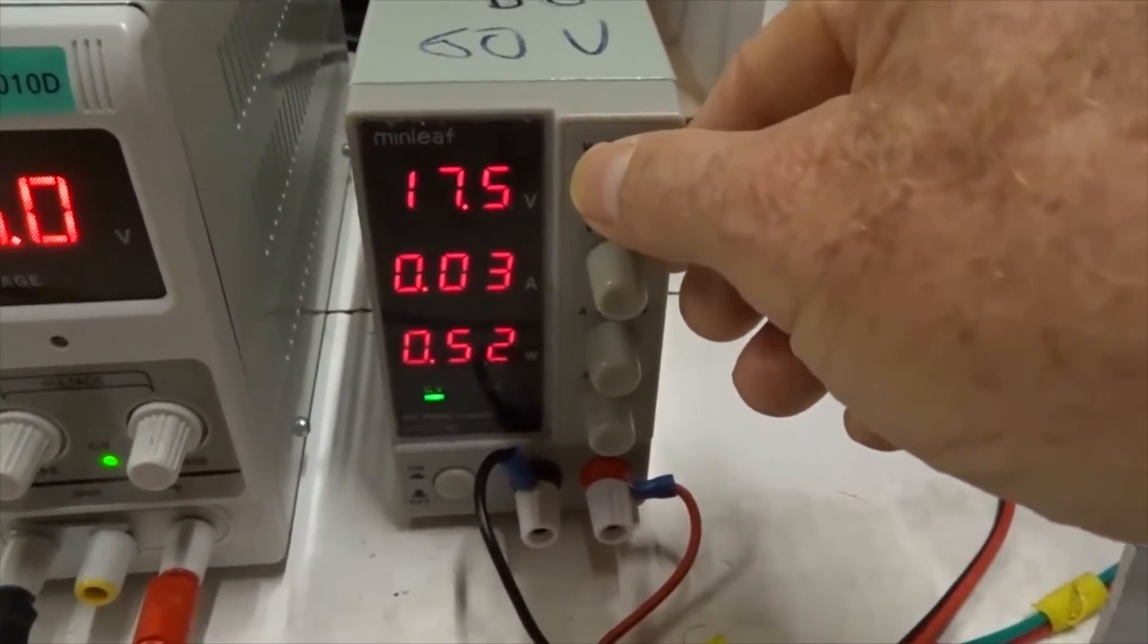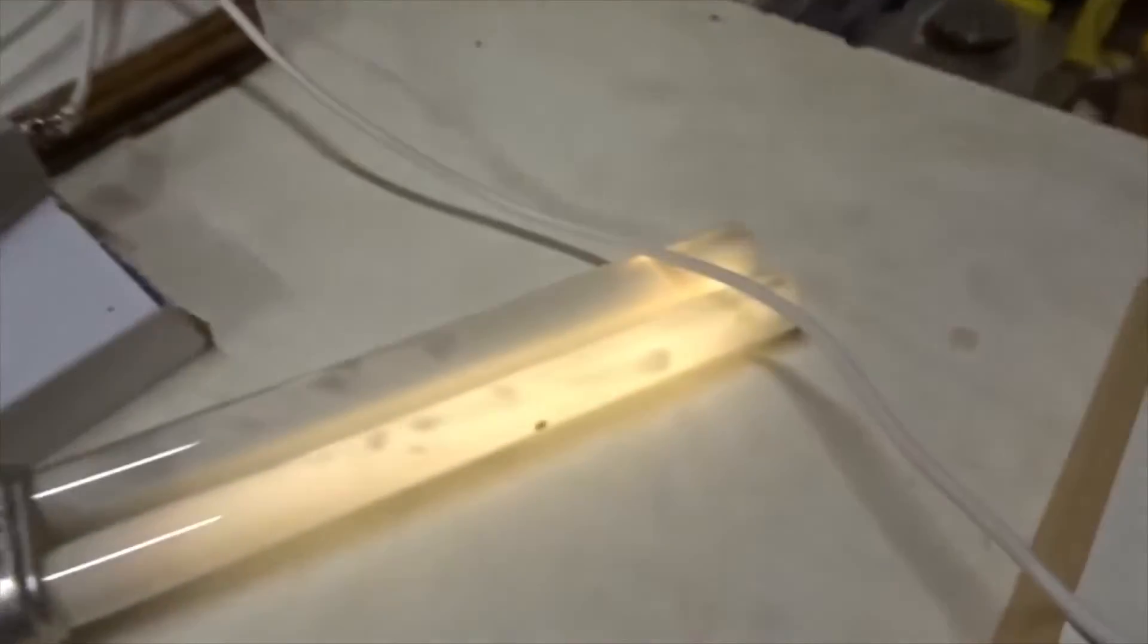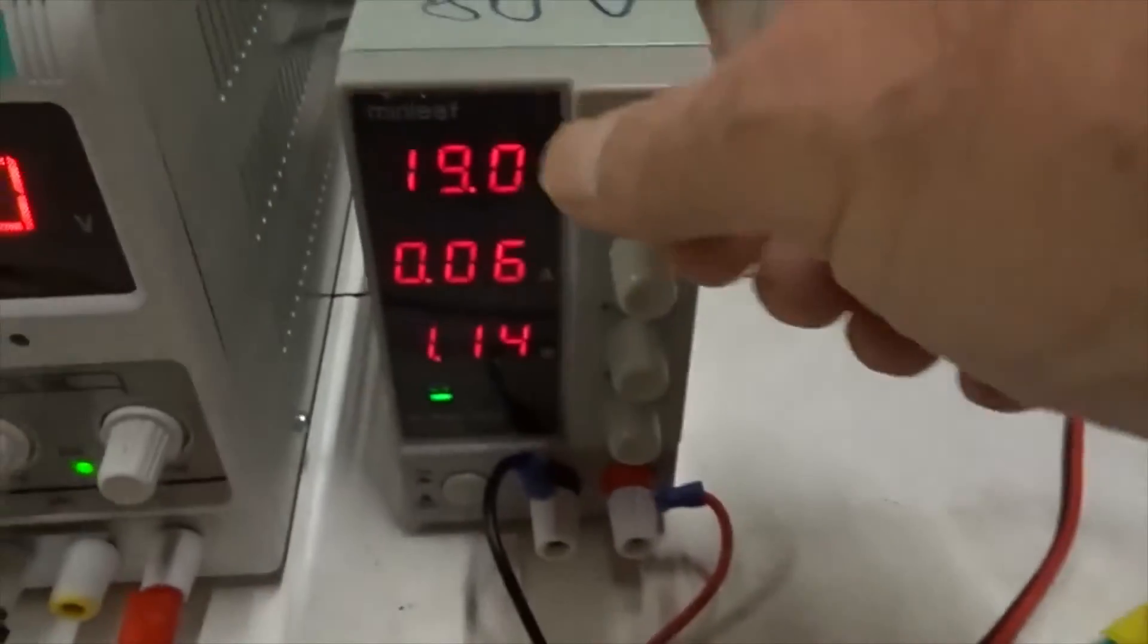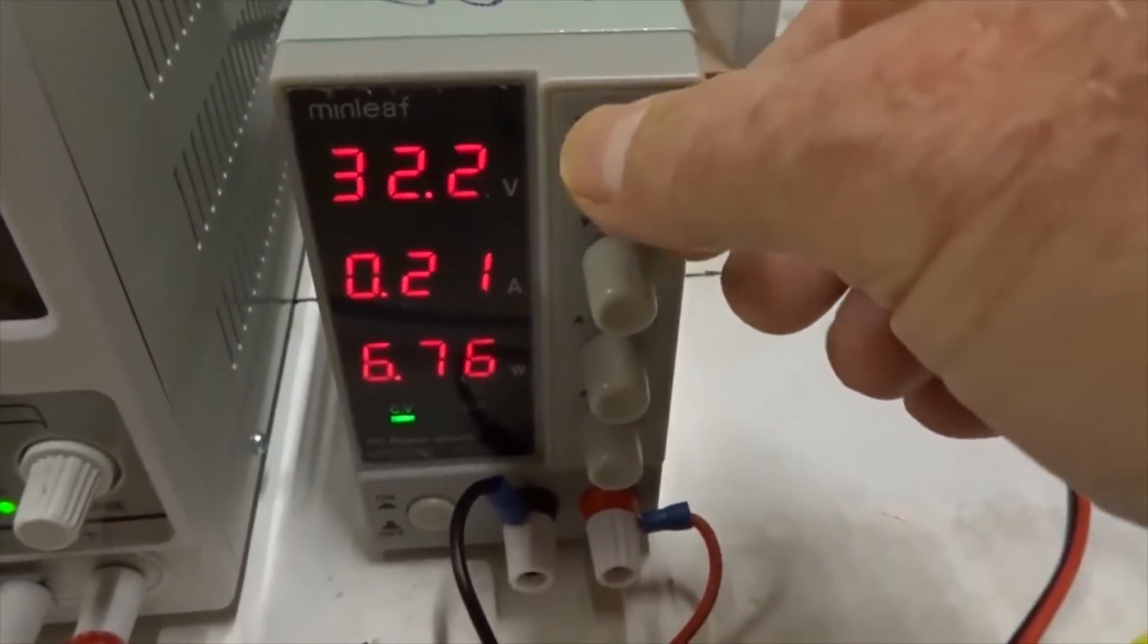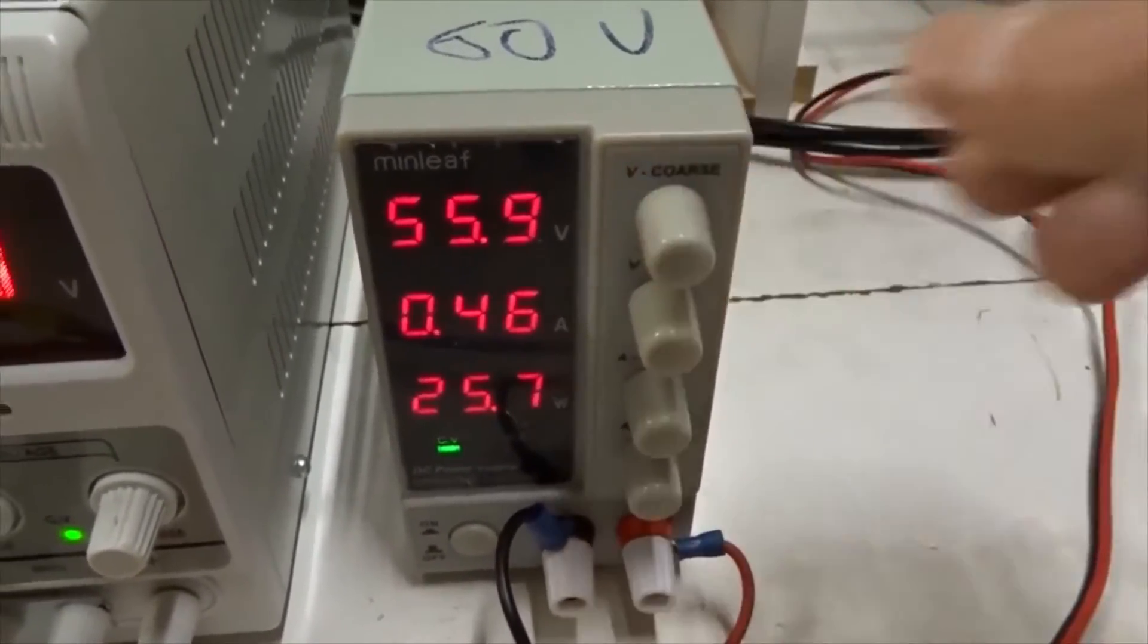It comes on at about 17 volts and you can see wireless power comes out of that wire into a light bulb and it will go up to about 50 volts and 25 watts. It will be quite bright.